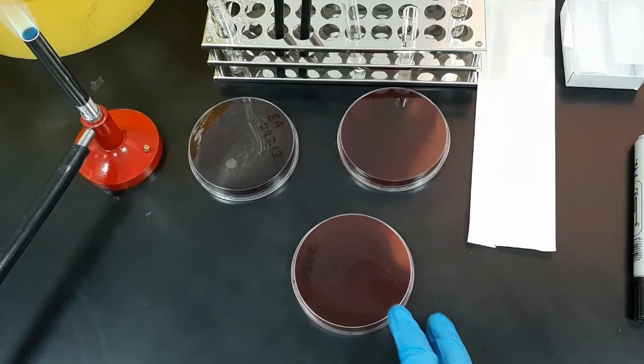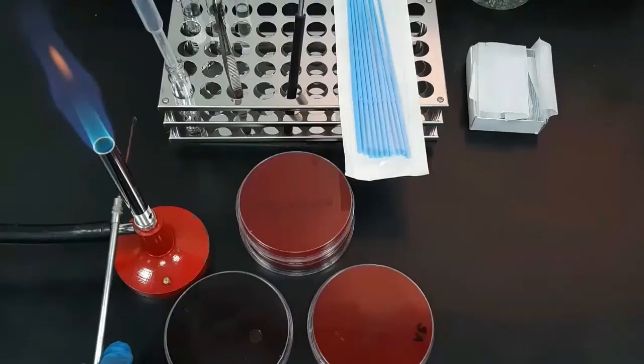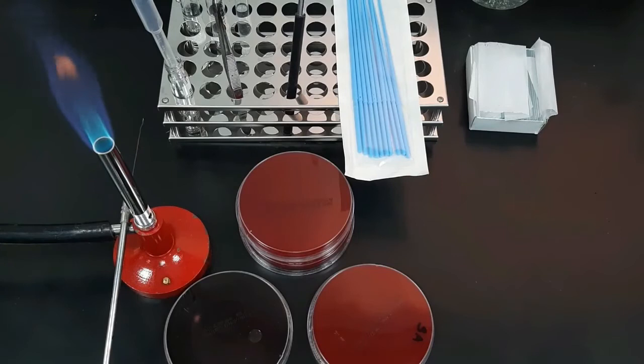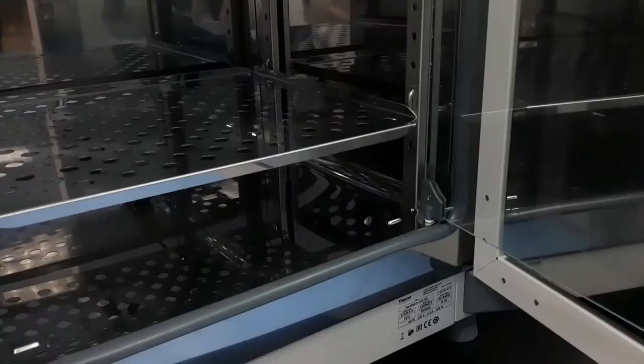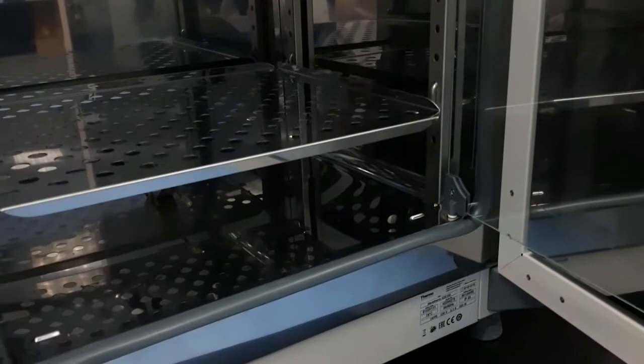Since there is thinning of inoculum during streaking, isolated colonies are formed at an ideal streak point. Discard the loop and incubate the plate in the incubator at 37 degrees Celsius overnight in an inverted position.